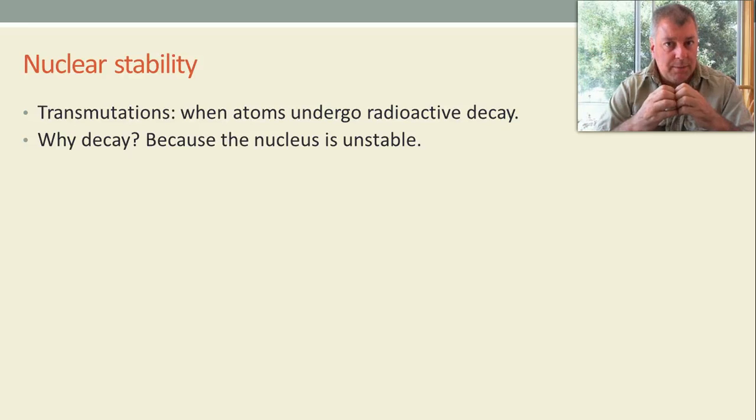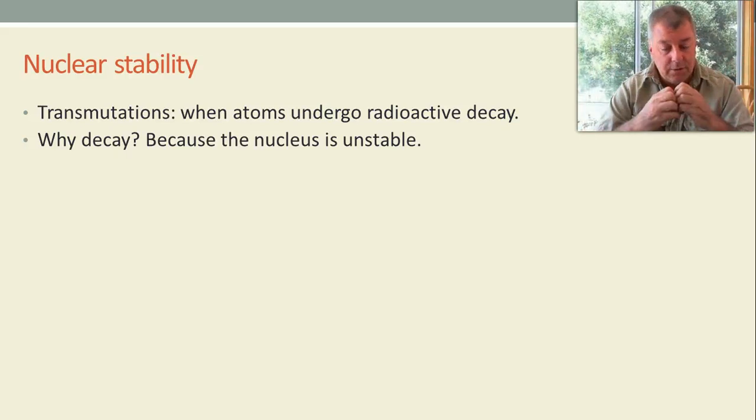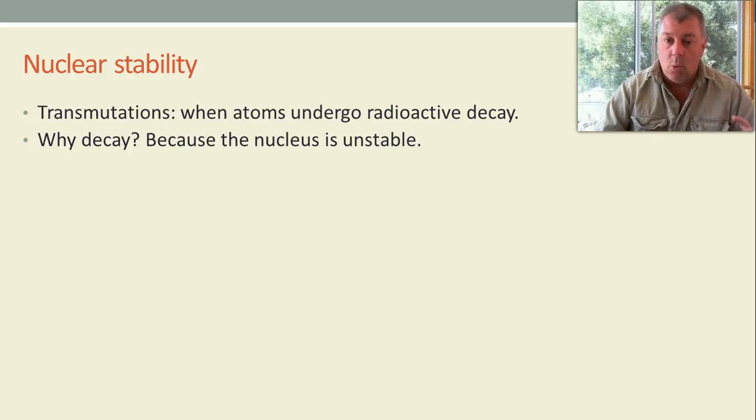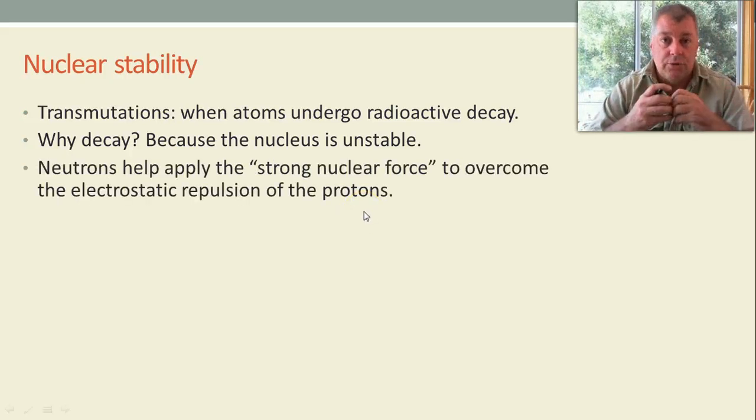Now, why doesn't that happen in a nucleus? In the simplest nucleus, not the hydrogen, which is the simplest. In the next simplest, in helium, you have two protons close together. Why don't they just fly off? And in fact, in every nucleus you have lots of protons all close together. Why don't they fly off?